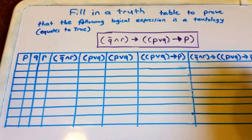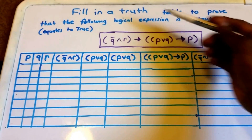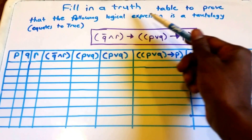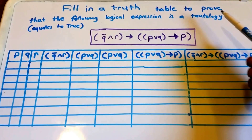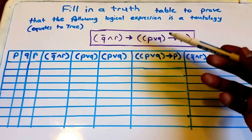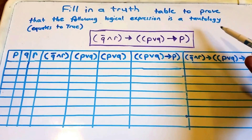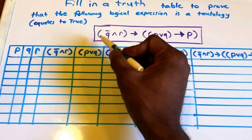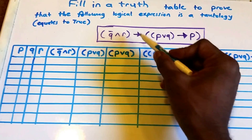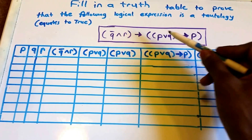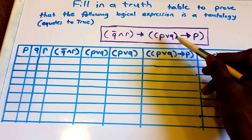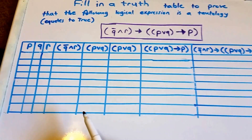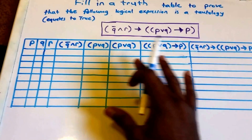Hey guys, welcome to this video. In this video we want to fill in a truth table to prove that the following logical expression is a tautology, which means that the logical expression just equates to true. Here we have the logical expression in purple: it says 'not q and r implies p or q, which implies p'.